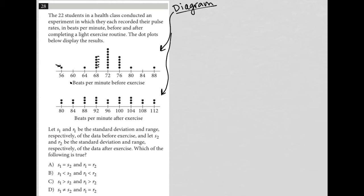And then beats per minute after exercise, it looks like the range here is higher. So we start at 80 instead of starting at 56. And it seems to be more distributed. Everything has at least two. Only a few places do we see the three dots. So let's start reading the information.